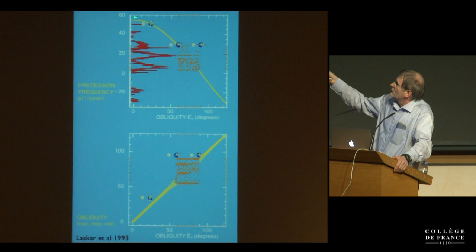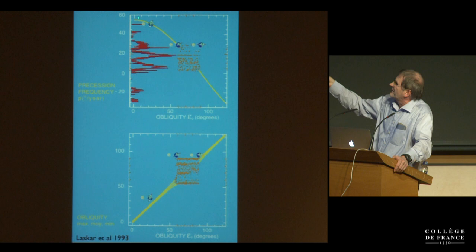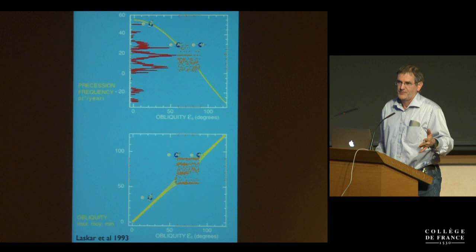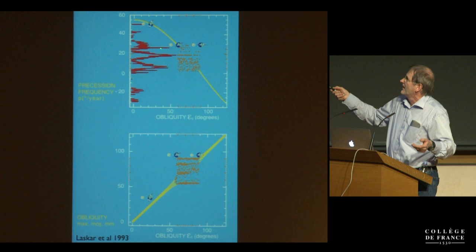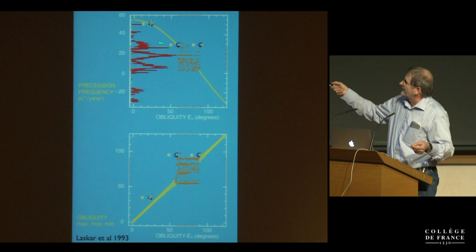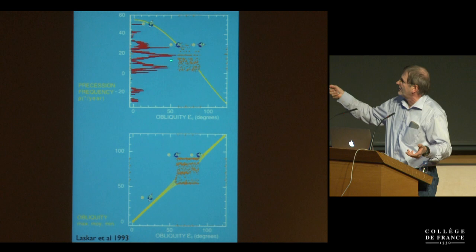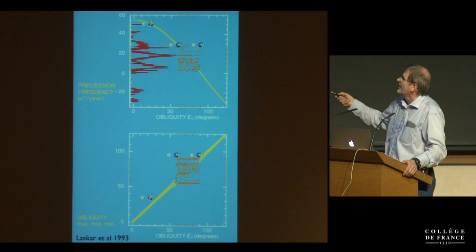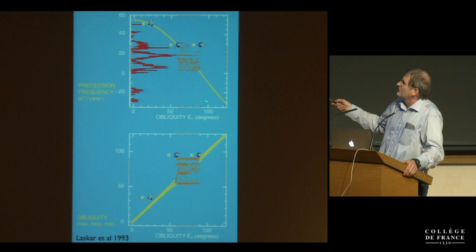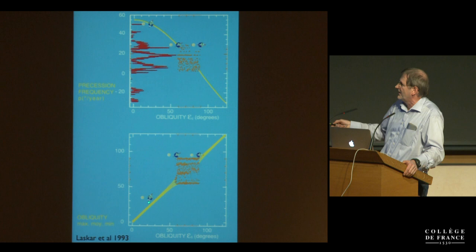The spectrum of driving terms due to planetary perturbations is shown here in red. At Earth's current 23 degrees we have no big resonant terms, so no significant influence. But if you tilt the Earth to 60 degrees, the precession frequency matches large terms due to Jupiter and Saturn — resonances overlap — creating a big chaotic region where obliquity evolves from 60 to 90 degrees rapidly in a few million years.